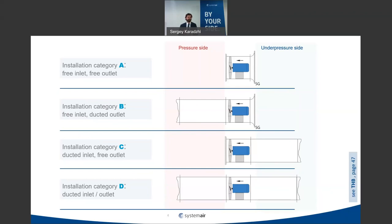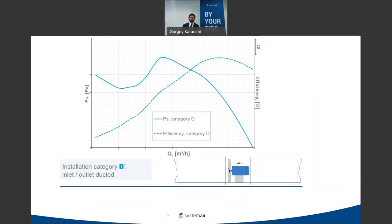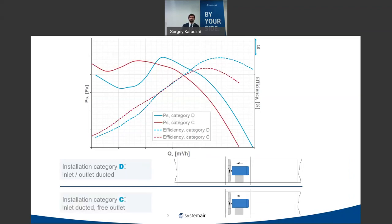A fan can have slightly different curves even when measured on a standardized test rig, depending on the installation category. For example, a fan measured in category D — with duct on inlet and outlet — can show much lower efficiency and a different pressure curve when measured in category C without a duct on the outlet.